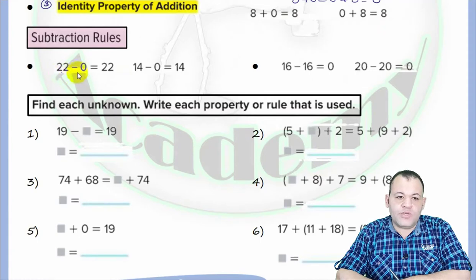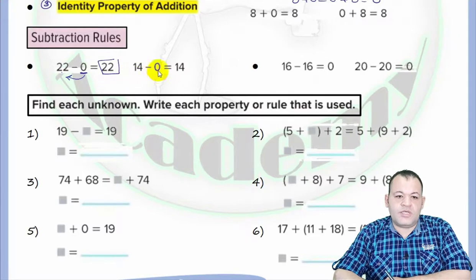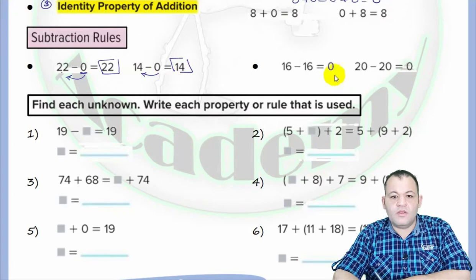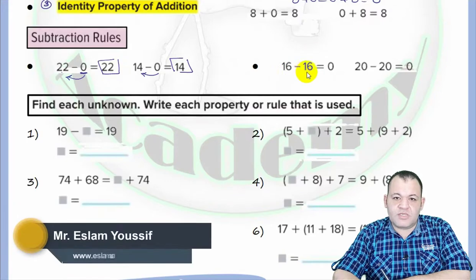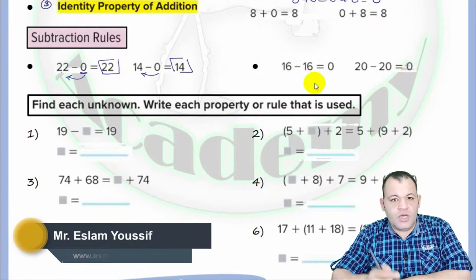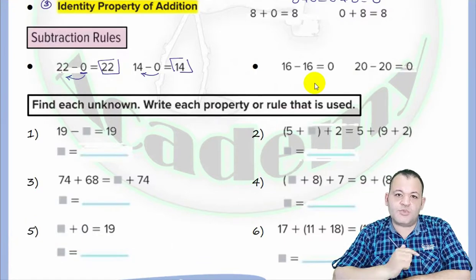For example, 22 minus 0 equals 22, and 14 minus 0 equals 14. If you subtract zero from any number, the number will not change. For the second rule: 16 minus 16 equals zero, and 20 minus 20 equals zero. A number minus itself equals zero. This is defined by the subtraction rule.